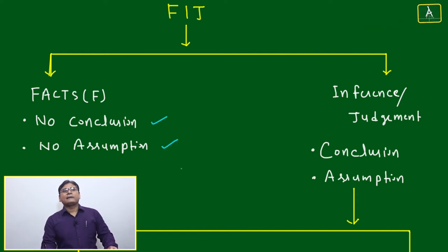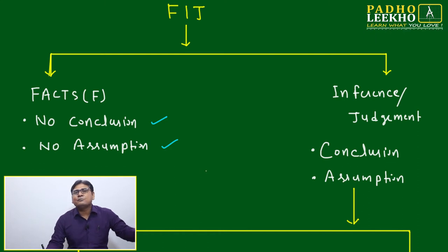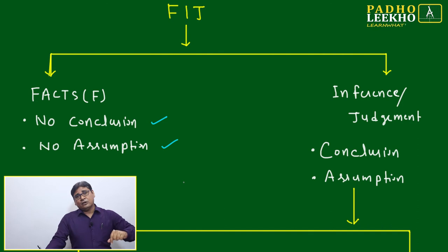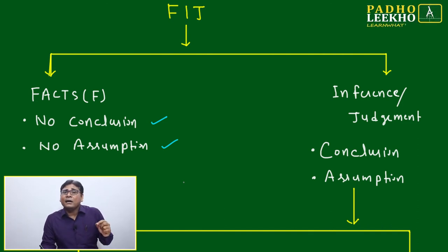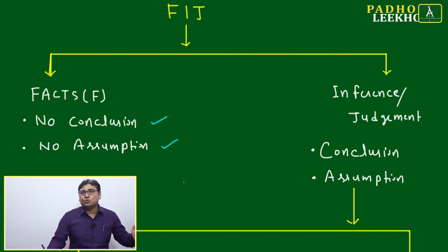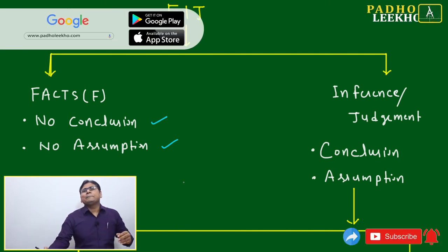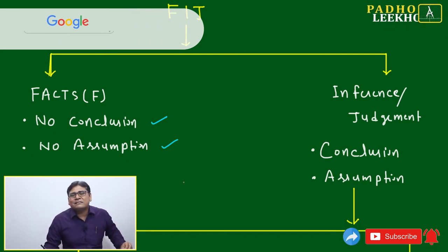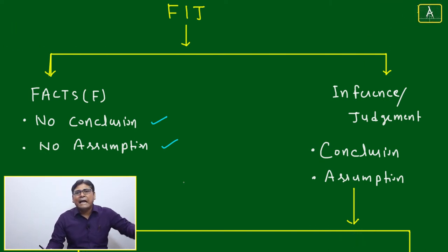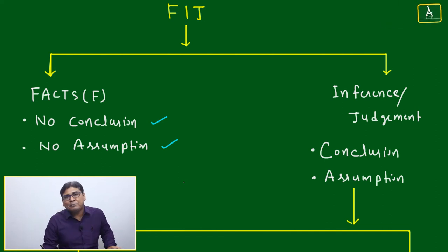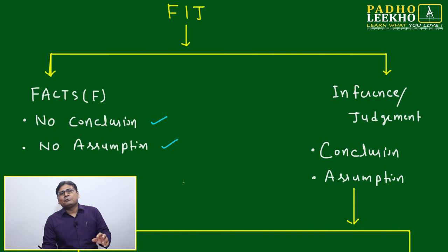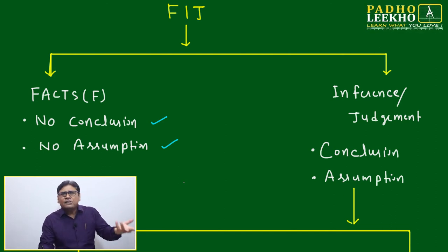Facts have no conclusion, no assumption — a fact is a fact. For example, '1857 India's first revolution against the British happened' — that is a fact. Wherever data is given, that is one criterion for a fact, since data cannot be wrong. However, we also need to verify whether the data is from an authentic source. For instance, in 1774 the Battle of Buxar: the Mughal was defeated, a landmark for British rule in India.